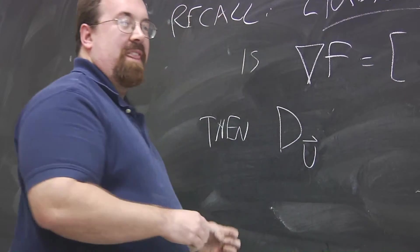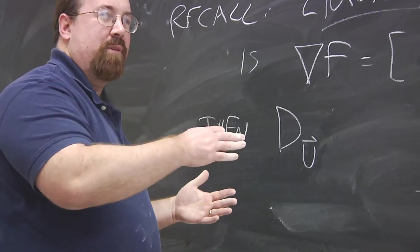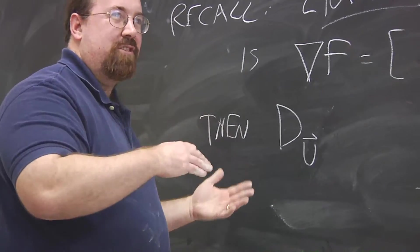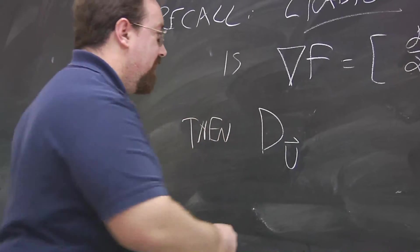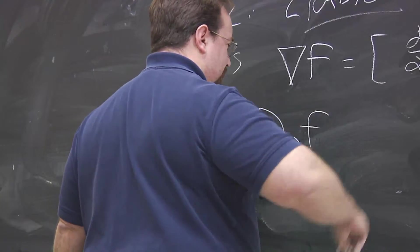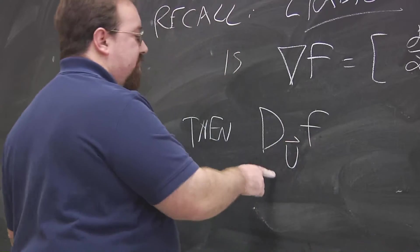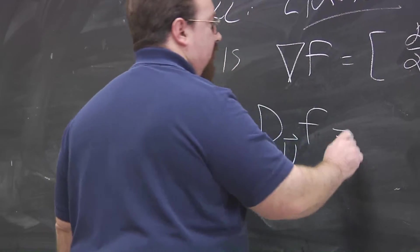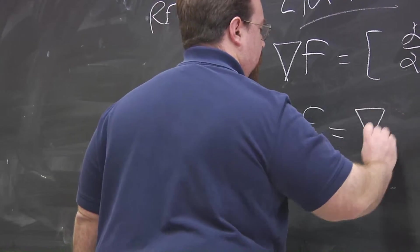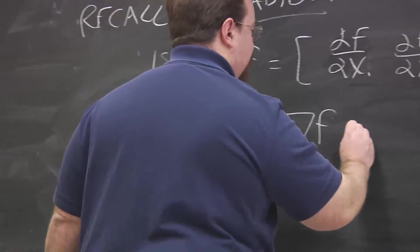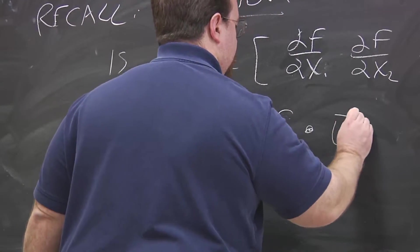Okay, so apparently, in class, I can differentiate properly, but not get my notation straight. If I'm writing the notes, it's vice versa. Whatever. All right, so then the directional derivative of f in the direction of u is the gradient dot product with u.